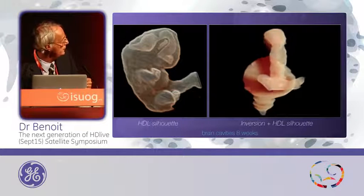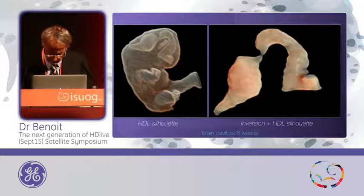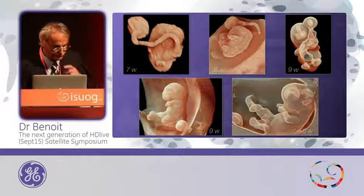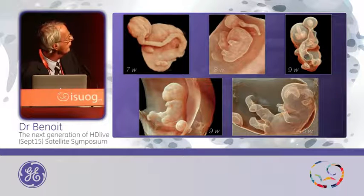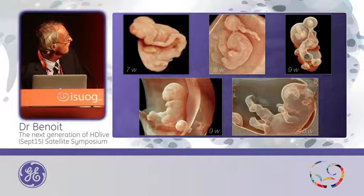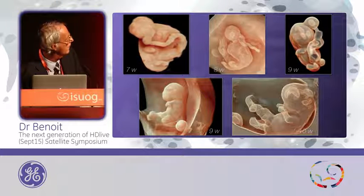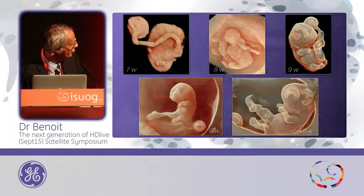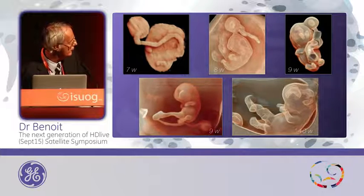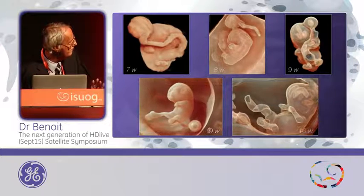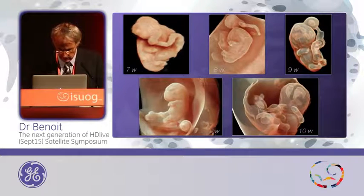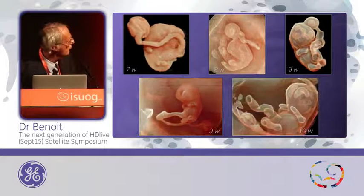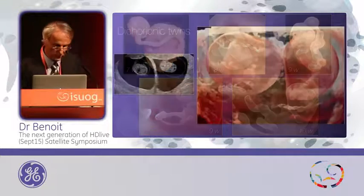This is a result with inversion and also with HDLive. Now some examples in the first trimester of pregnancy: the first one at seven weeks, then eight weeks, nine weeks. And this one at nine weeks of pregnancy — we can clearly see the vital link connected to the umbilical cord. And this one at ten weeks of pregnancy, where we can really recognize the two lateral ventricles.